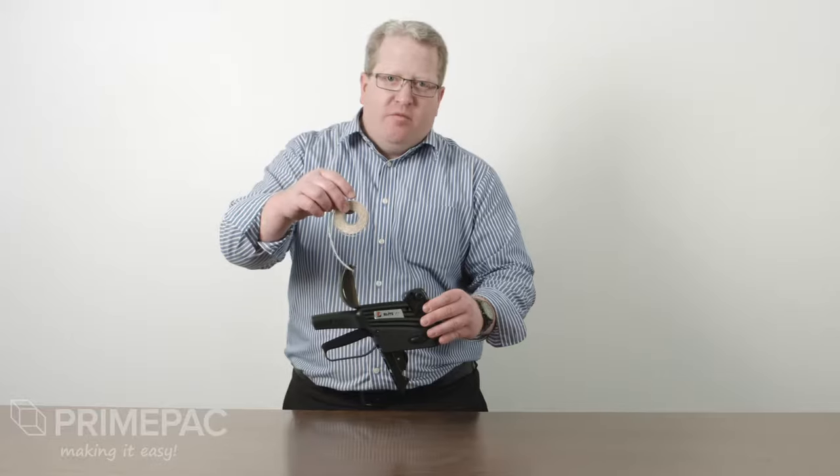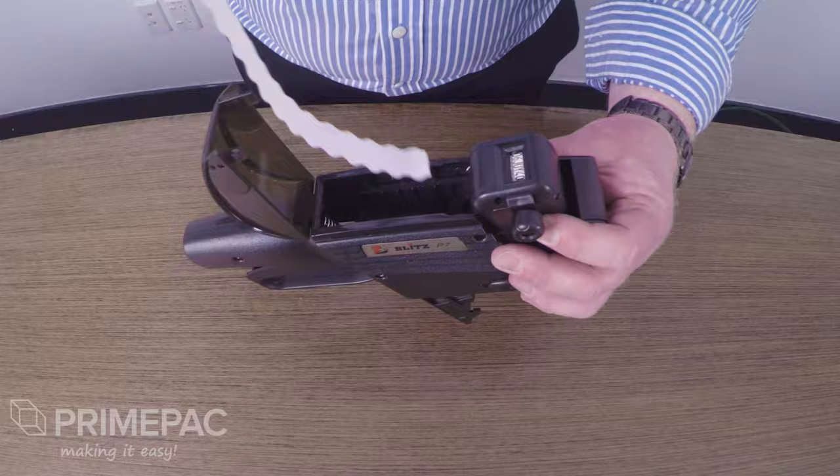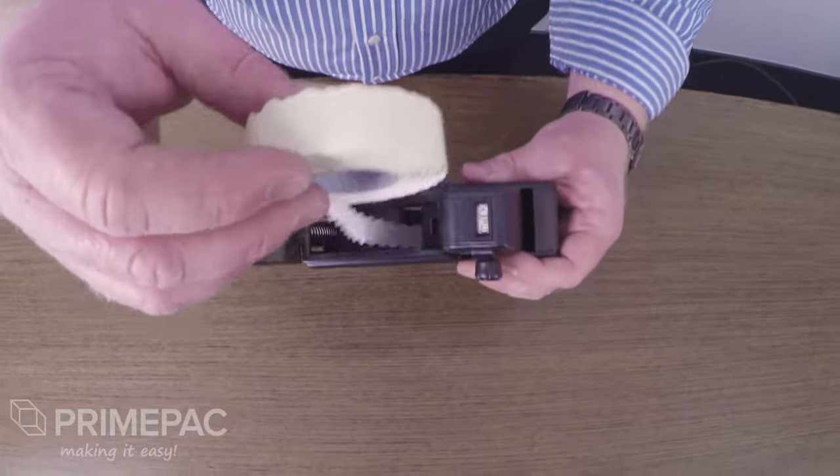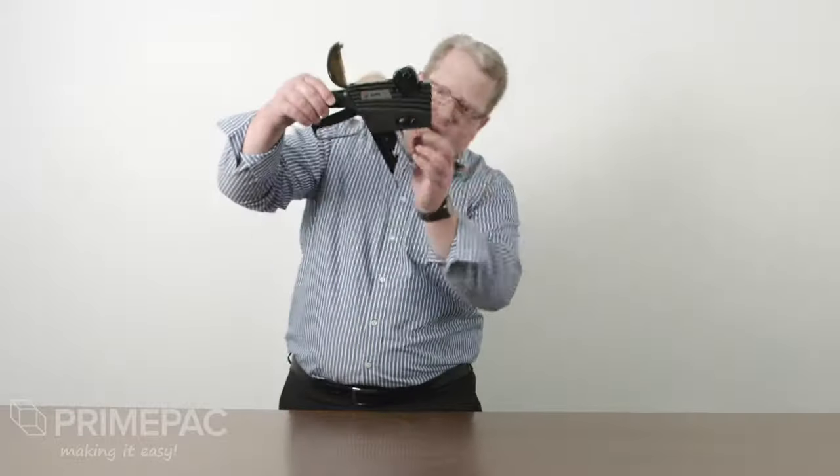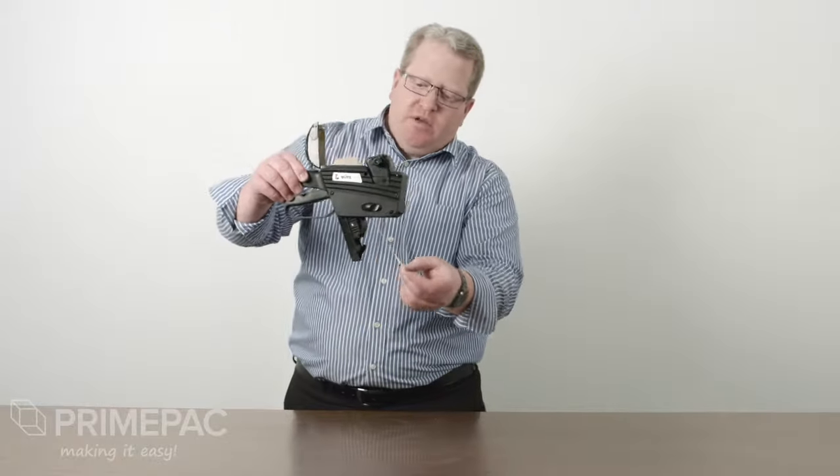Grab the labels so that the labels are coming off the bottom of the roll and just feed that straight into the top here. There's a hole right through to the bottom so that you can pull the labels through like so.